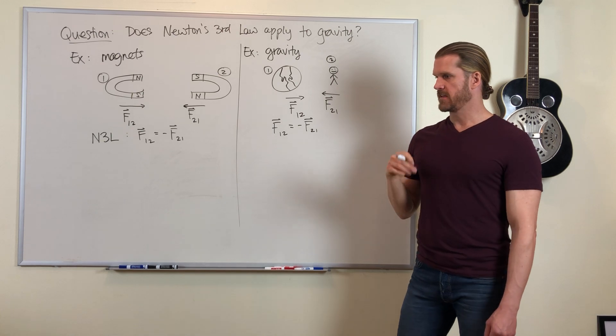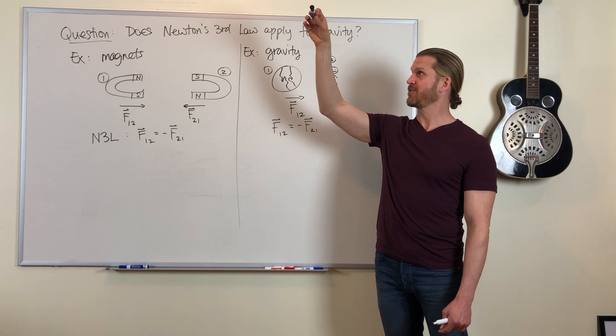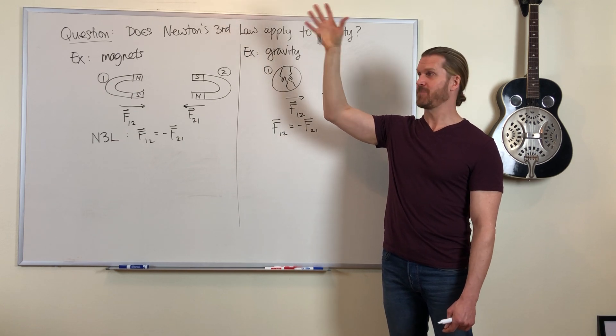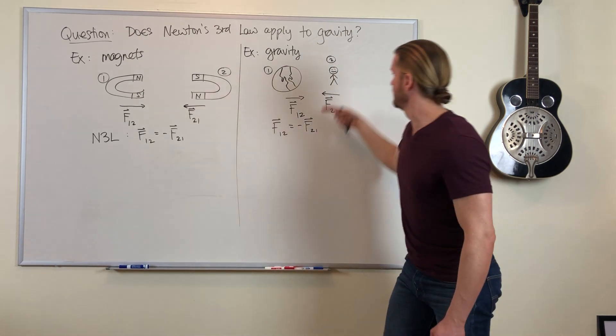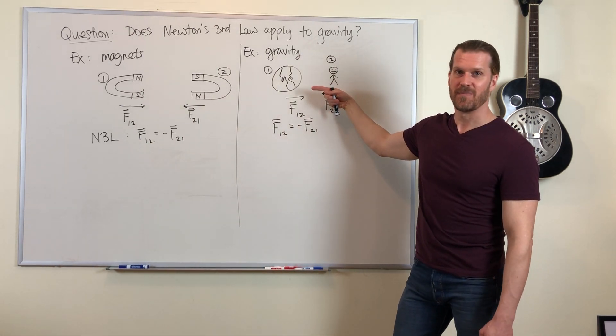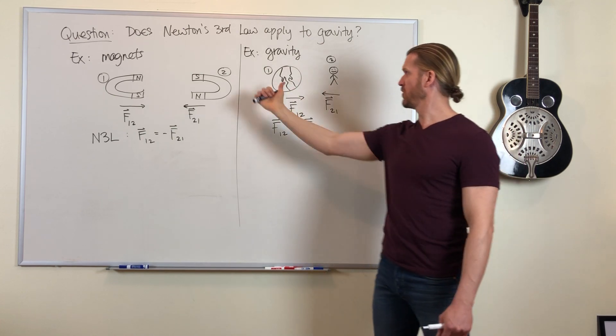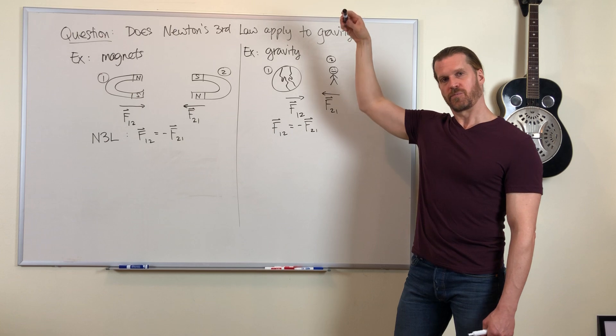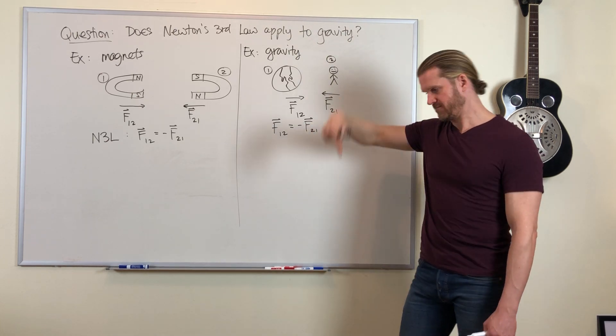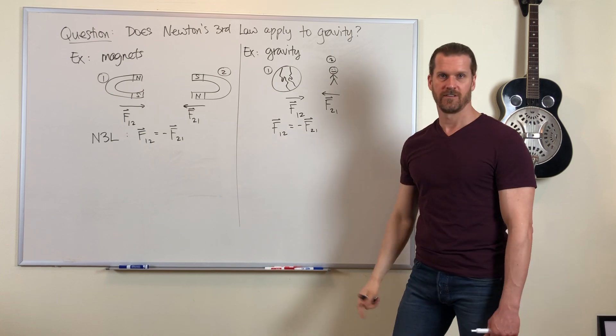So in other words, the force of the Earth pulling on this pen is the same magnitude as the force of the pen pulling on Earth. So the Earth pulls the pen in this direction. This pen pulls the Earth in the upward direction.